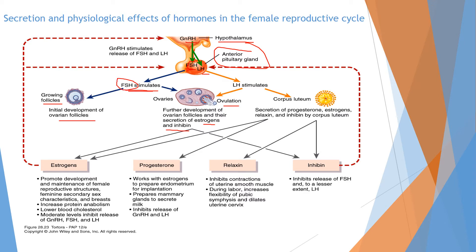The next hormone, LH — luteinizing hormone — will stimulate ovulation and is also involved in the generation of the corpus luteum. The corpus luteum is very important for the secretion of estrogen, progesterone, relaxin, and inhibin.